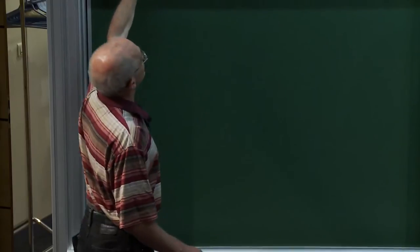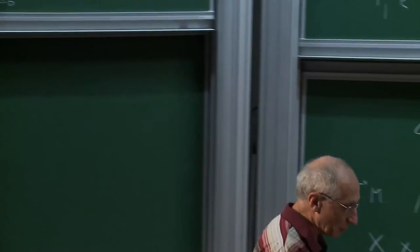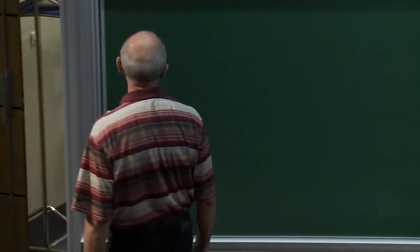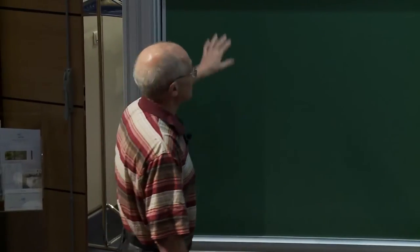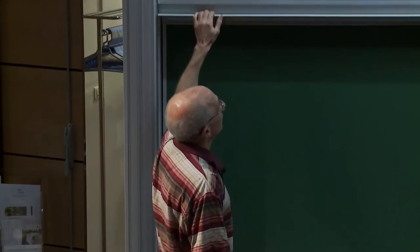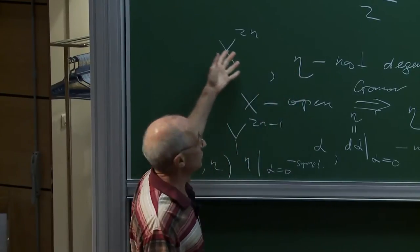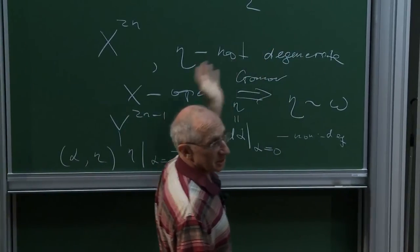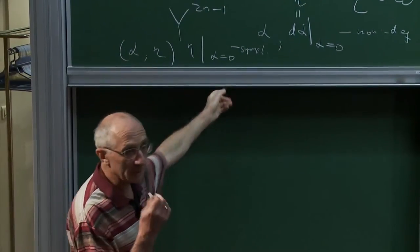Gromov's theorem says that in the open case, if you have an almost-contact structure, you can deform it to a genuine contact structure. Moreover, Gromov proved this in the parametric case as well: if you have two symplectic forms that are homotopic as almost-symplectic forms, they are also homotopic as symplectic forms on an open manifold.